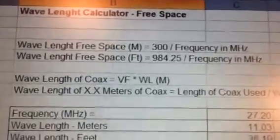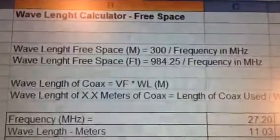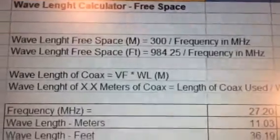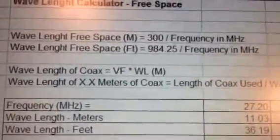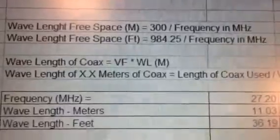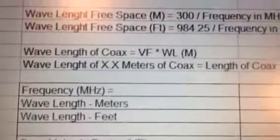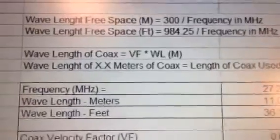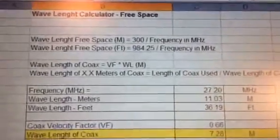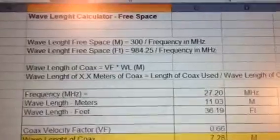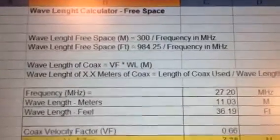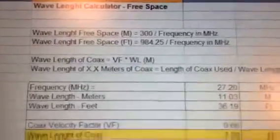The wavelength in a piece of coax is much different — it equals the velocity factor of the coax times the free-space wavelength, in either meters or feet. Velocity factor tables are widely available online. The particular coax I'm using has a velocity factor of 0.66, meaning the wave travels at 66% of the speed of light.